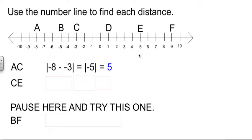If you want to, you could actually count that out: 1, 2, 3, 4, 5. That's up to you. C to E. C is at negative 3, E is at 5. So we're looking for negative 3 minus 5, which is negative 8, and the absolute value of that is 8.